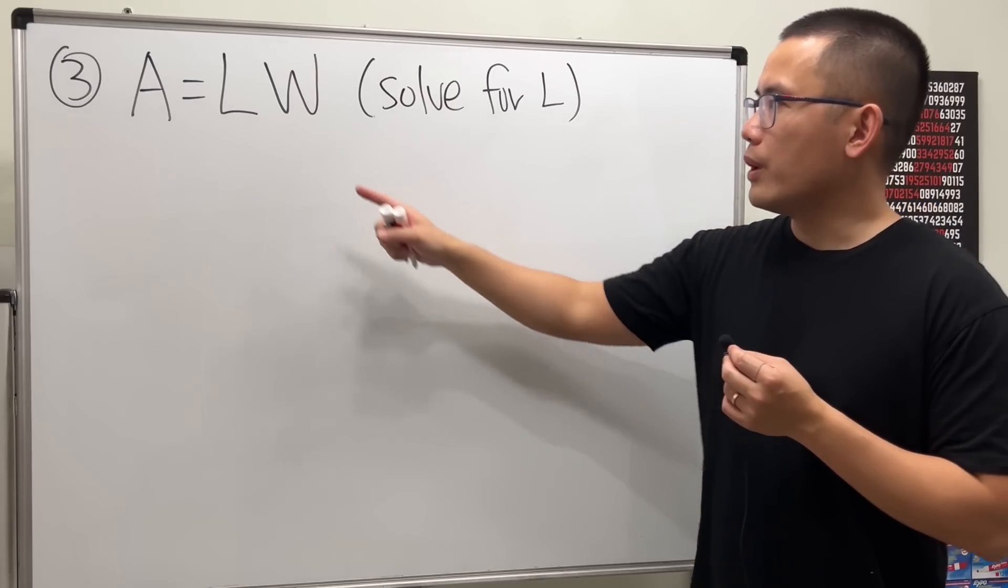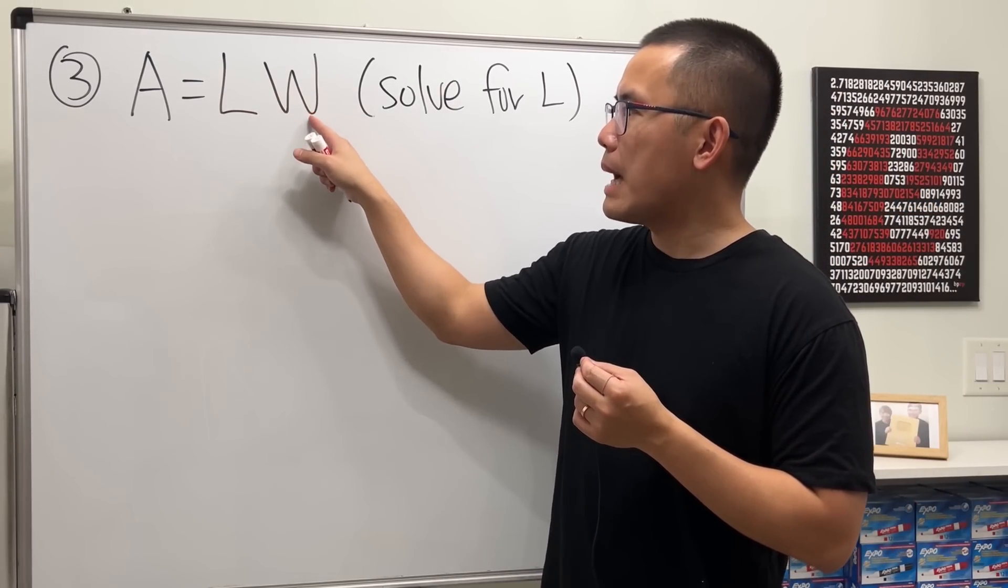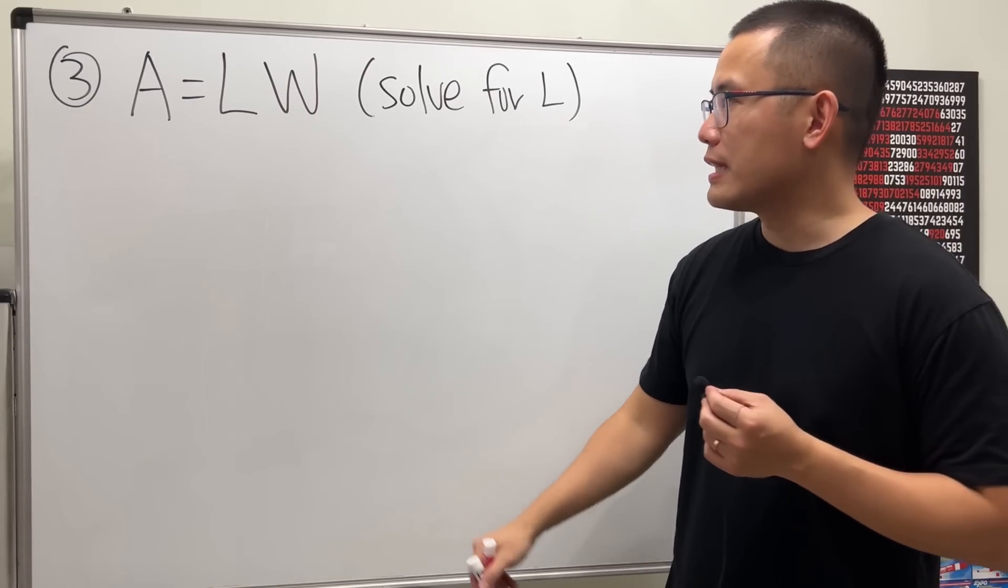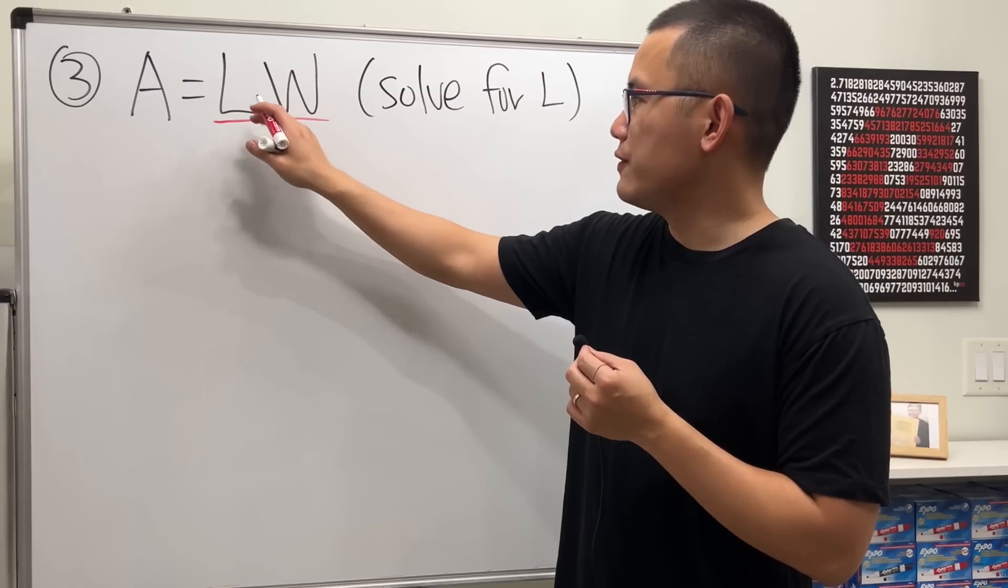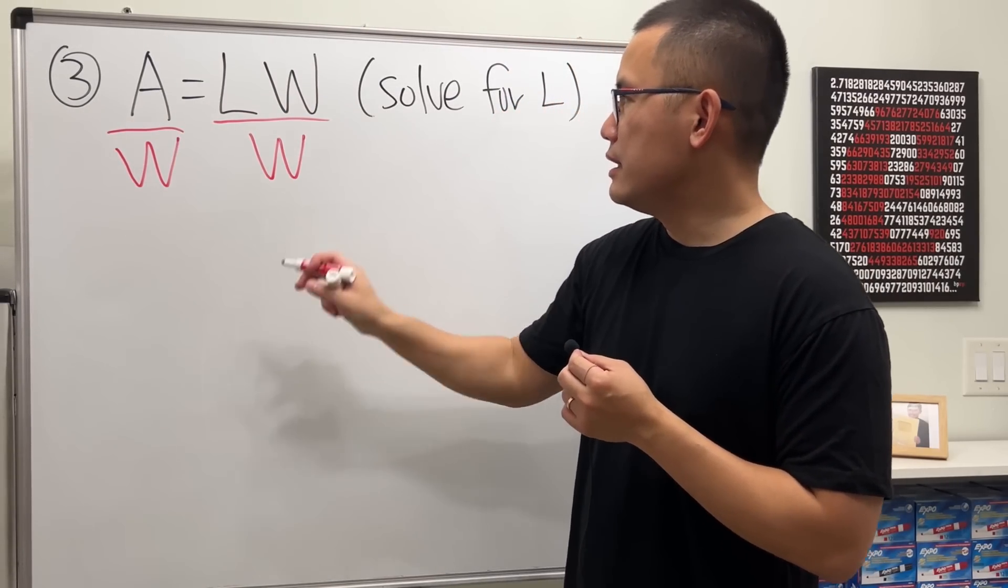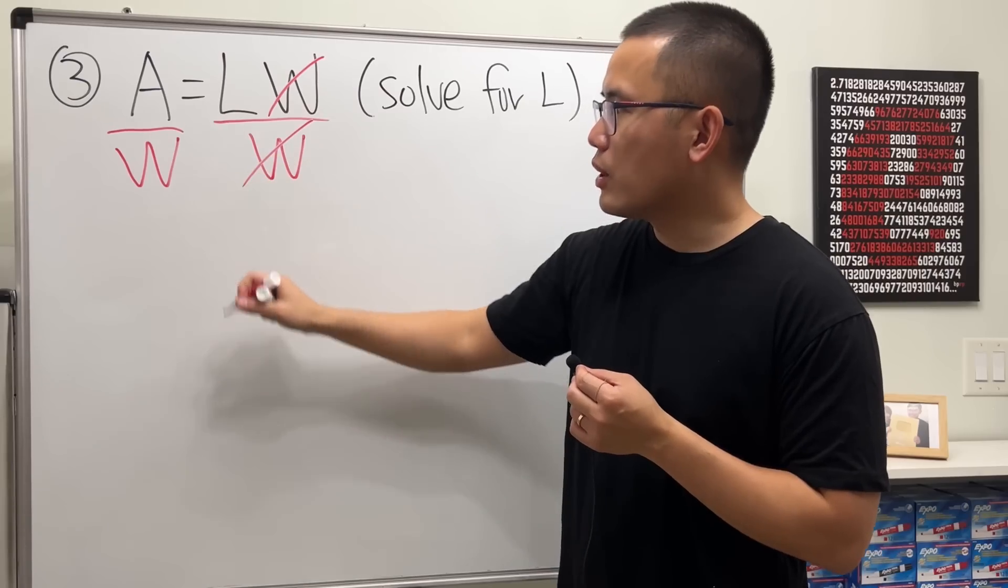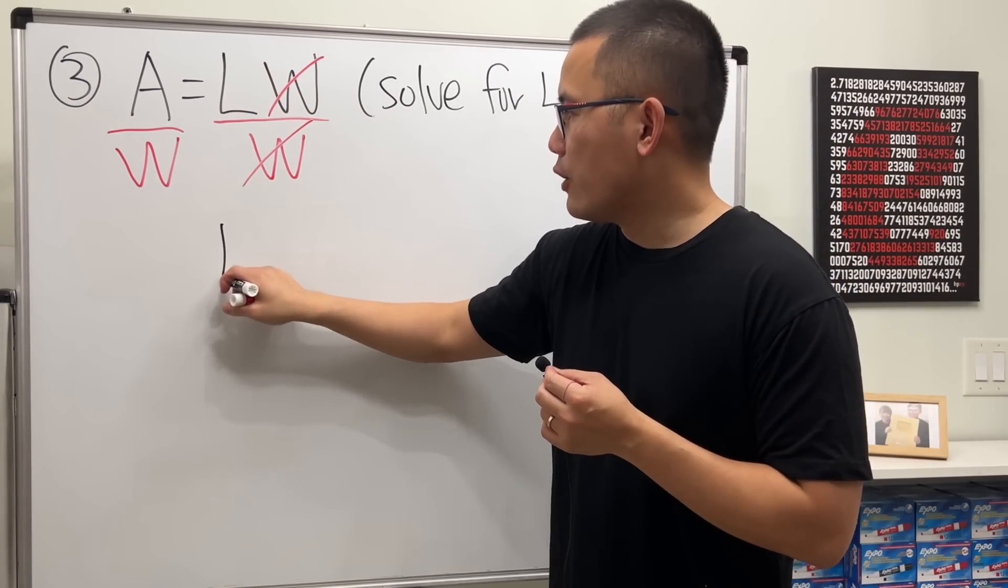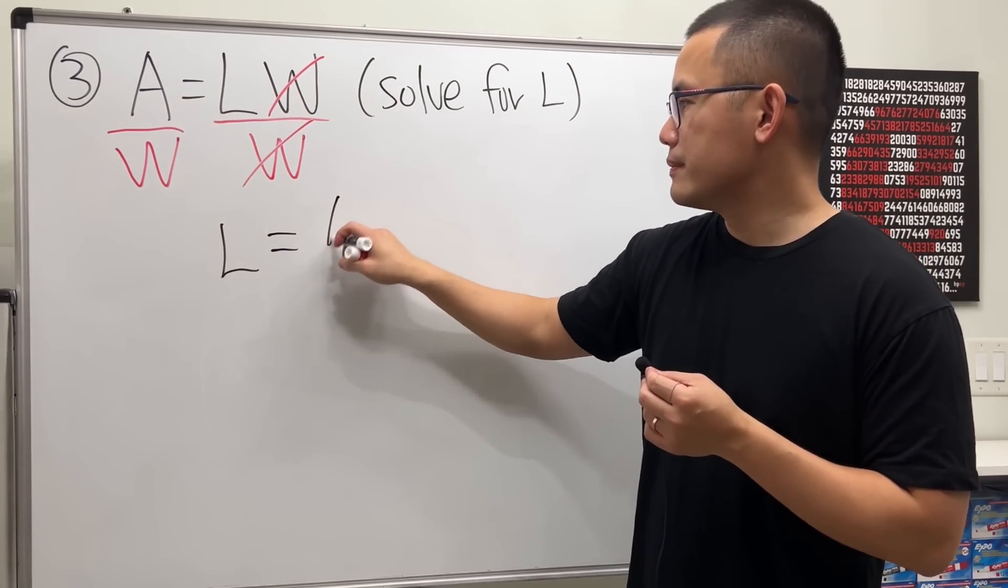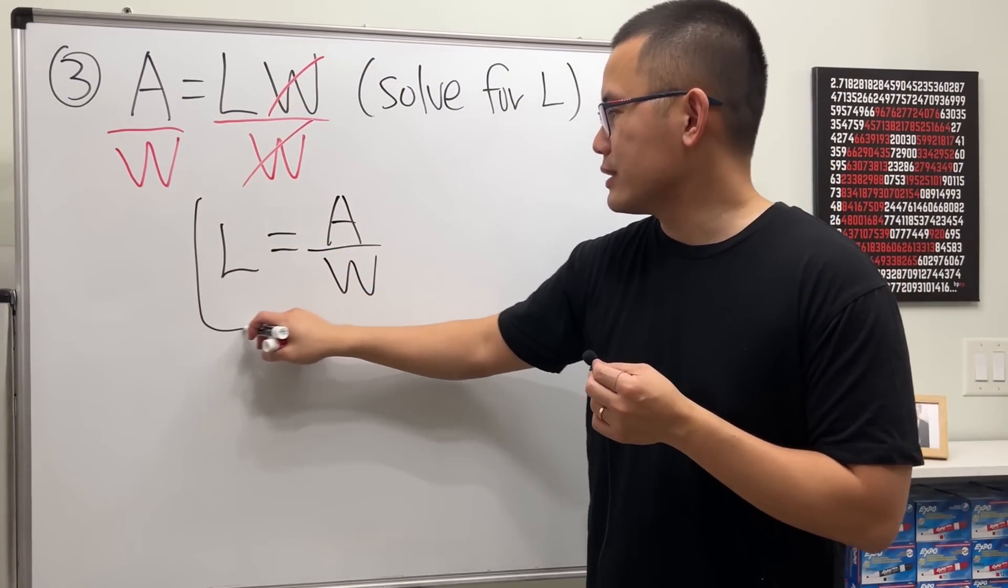To solve for L, because this is L times W, let's get rid of the W by dividing the W to both sides. So that should work. Divide this by W, and do the same thing to the other side. This way, this and that can cancel. And let's write down the L first, and we get A over W. And that will do it.